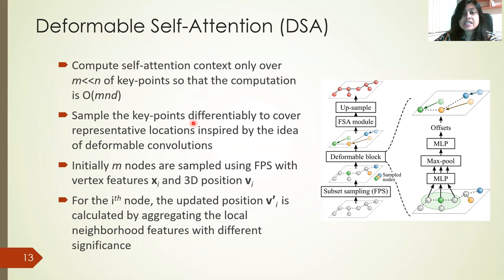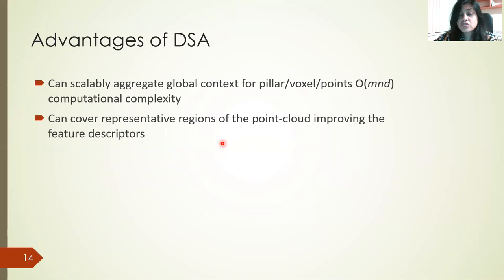We sample the key points differentially to cover representative locations, inspired by the idea of deformable computations. The advantage is that we can now scalably aggregate global context for pillar, voxel, or point representations with O(MND) computational complexity — no longer quadratic. We can also cover representative regions of the point cloud, improving the feature descriptors.